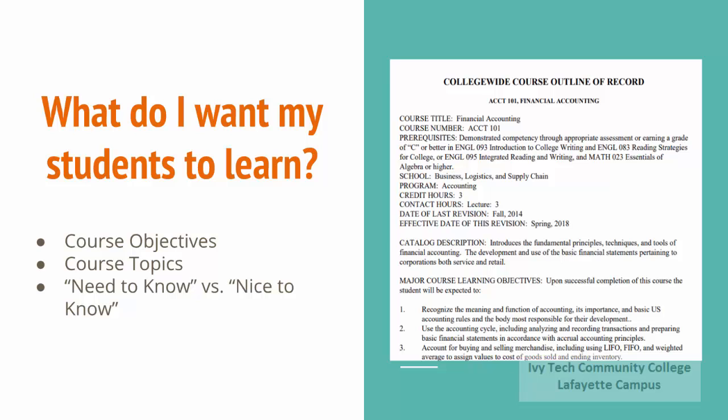The first question is: what do I want my students to learn? The most important thing we can do getting started on our course transition is to revisit the official course outline of record, or COR. This includes the major course learning objectives and course topics. As we review our existing content, keep the COR handy and make sure it serves as the decision maker for whether content falls under the category of need to know or simply nice to know.